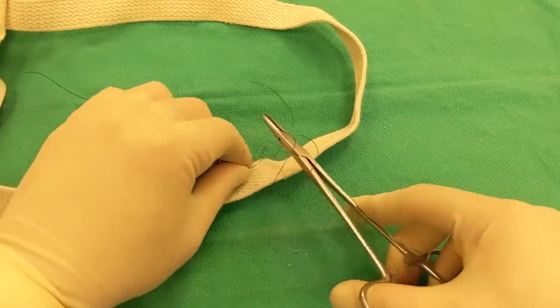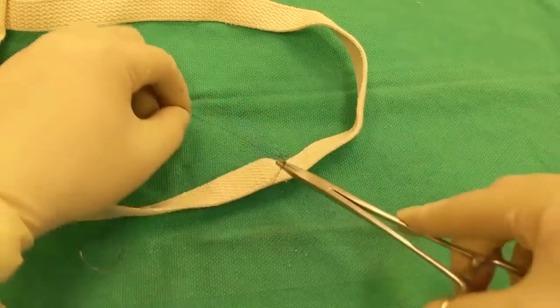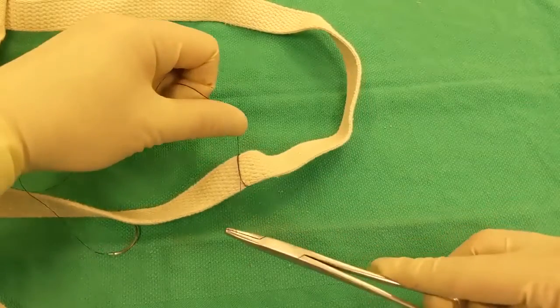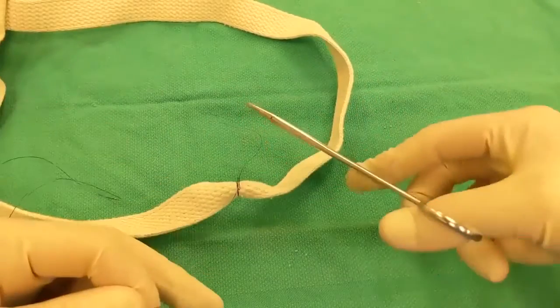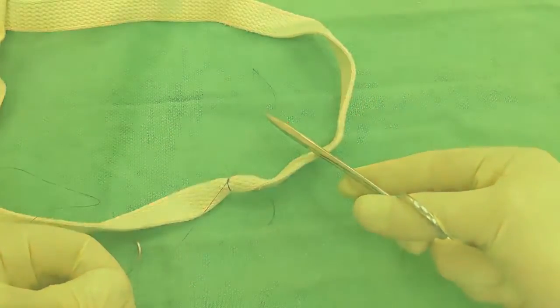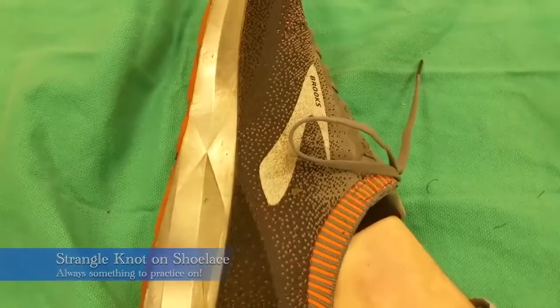So you go through the loop, wrap, and grab that tag, and pull it through. And you can see also, this tissue kind of gives us a little bit of different feedback as well than the stapler did. So it's definitely nice to practice on different things, and there's always something around.